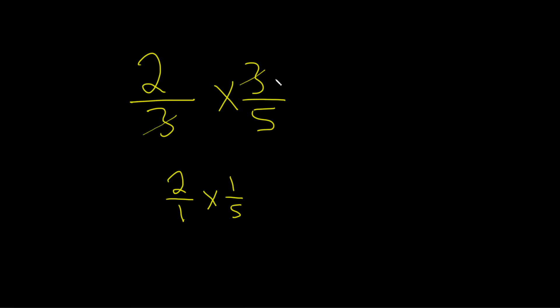Again, you can cancel like that, but it has to be diagonally. Notice the 2 and the 5 don't really have any common factors, so we can't really cancel. And now we just multiply straight across.